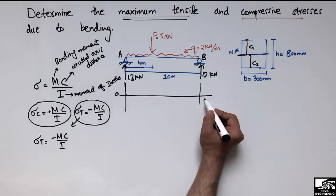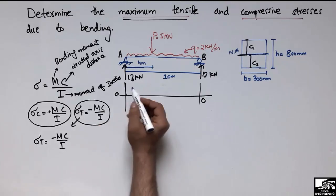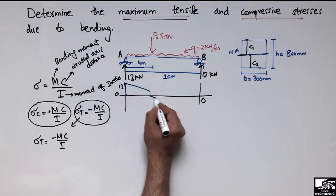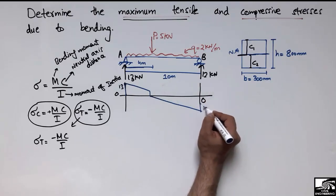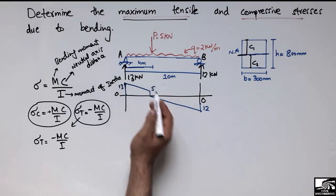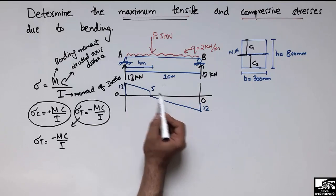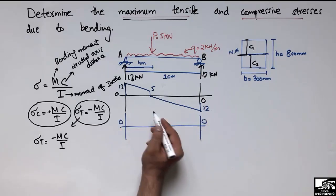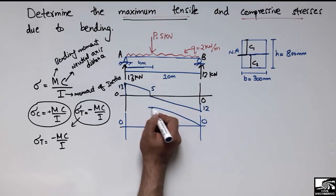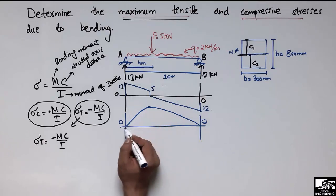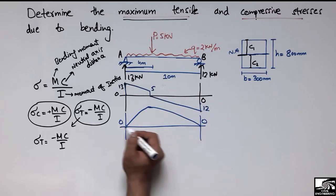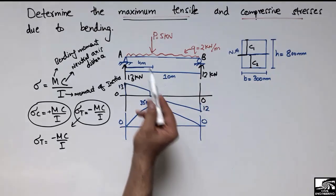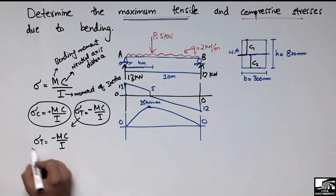Drawing the shear force diagram: starting from the zero reference line, it goes up to 13, then moves downward. With the 5 kN point load, it steps down further, and at the negative portion we have 12 going back. From the shear force diagram we can derive the bending moment diagram — the maximum bending moment occurs at a point along the beam, returning to zero at the pin/roller supports. The maximum bending moment value is 36 kN·m.